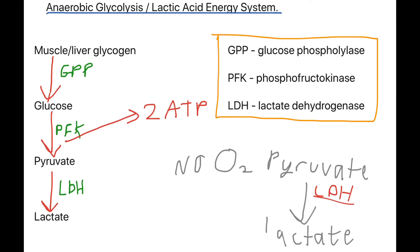Now we're going to look at anaerobic glycolysis, or the lactic acid energy system — either term is acceptable in the exam. Muscle and liver glycogen is broken down by the enzyme glucose phosphorylase into glucose. Glucose is then broken down further by phosphofructokinase (PFK), and pyruvate is broken down by lactate dehydrogenase (LDH) into lactate. In the absence of oxygen, pyruvate is converted into lactate, which is a harmful byproduct. The breakdown of glucose into pyruvate by PFK releases 2 ATP.